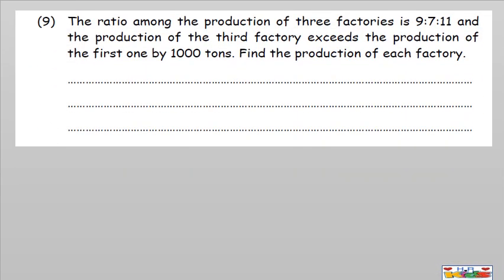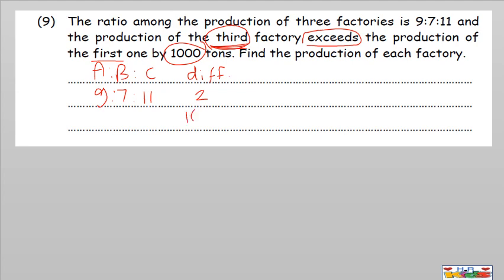Question number nine: the ratio among the production of three factories is 9 to 7 to 11. Write: first to second to third = 9 to 7 to 11. And the production of the third factory exceeds the first — so when we see 'exceeds,' that means difference — between the third and the first: 11 minus 9 equals 2. The difference between them is 1,000. Now let's find A, B, and C — students should complete this and write their answers in the comments.